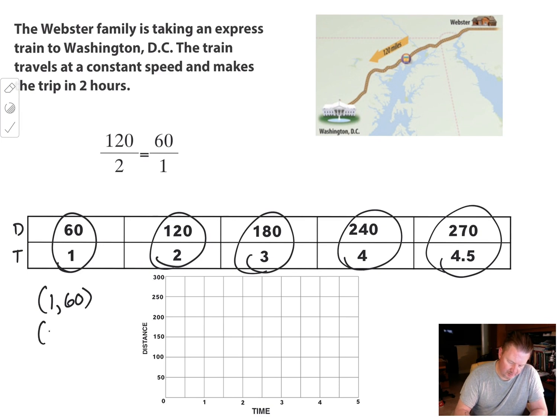All right. So my next ordered pair is 2, 120. Next ordered pair is 3, 180. And then 4, 270. And then finally 4, 5, and no wait, 240. Excuse me. Then this is 270. All right. So those are my ordered pairs. And I'm going to actually change my color. And I'm going to plot those things.